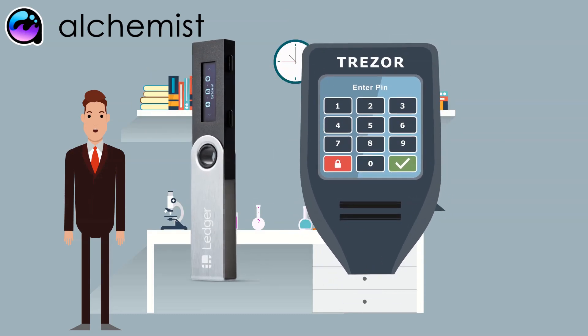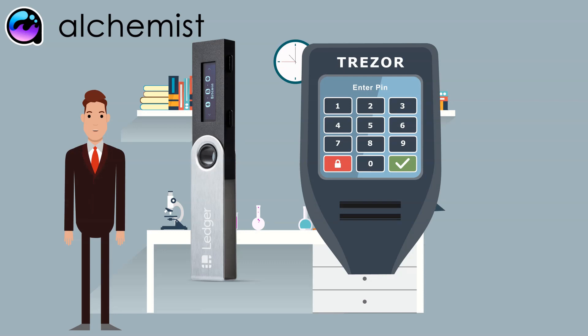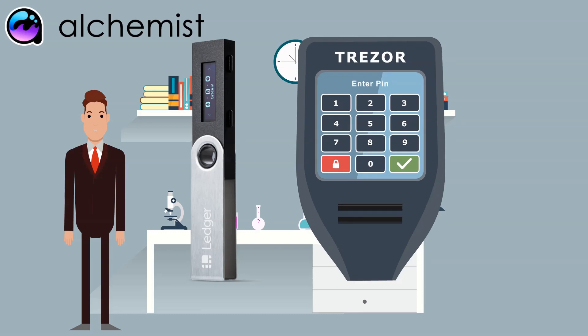Hardware wallets: These types of wallets look similar to a USB pen drive. Your keys are stored inside the device and only connected to a computer when you want to use your crypto.